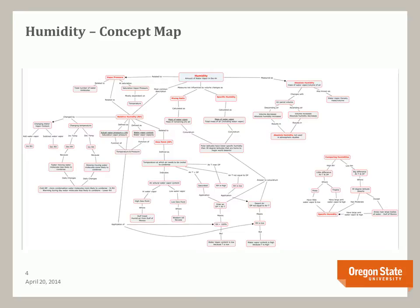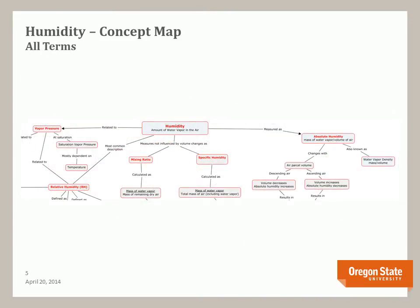Here is a humidity concept map I developed using a free tool called CMap — very easy to use and it makes nice concept maps. The bottom line is that humidity is a complex topic laden with various terminology. The major terms from the chapter: humidity is defined as the amount of water vapor in the air and is measured and reported in at least five different ways — absolute humidity, specific humidity, mixing ratio, vapor pressure, and relative humidity.